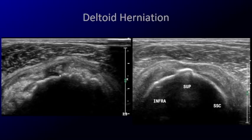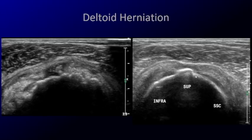The cuff tear defect can also be filled with blood or fluid that can look solid. How do you know whether you're looking at tendinosis or a defect? The cuff should have a convex outer contour — you can see a little dip in the contour here. You can accentuate that contour by compressing on the tendon, causing the deltoid to herniate into that defect. This is an example of a rotator cuff tear obscured originally by hypoechoic fluid.